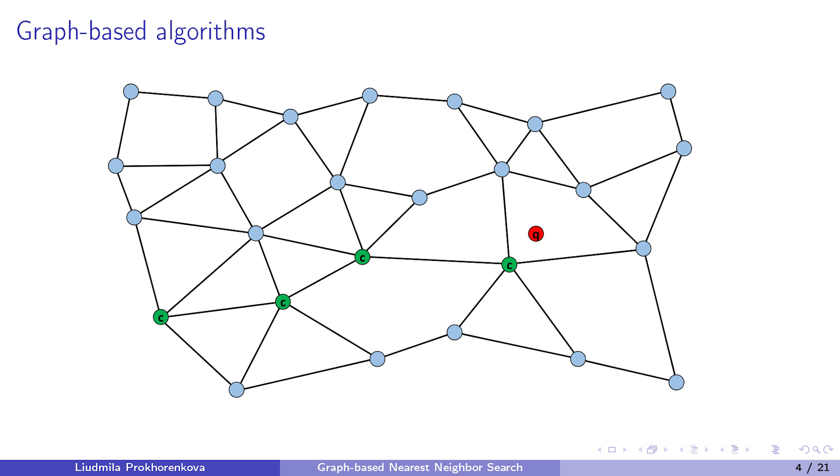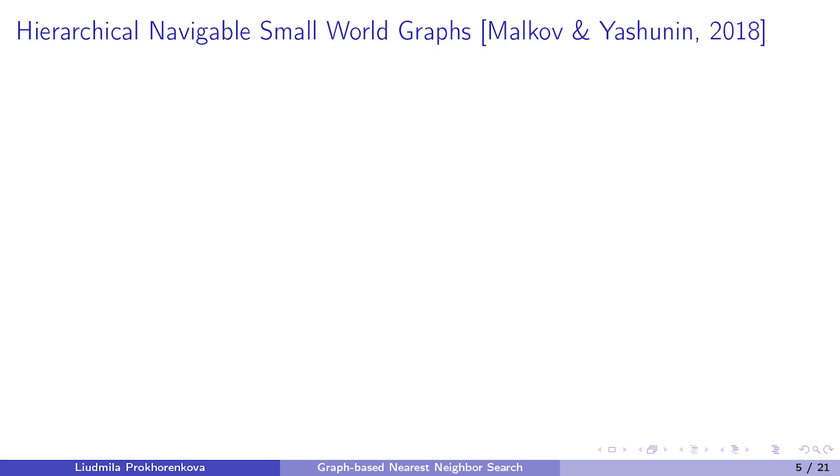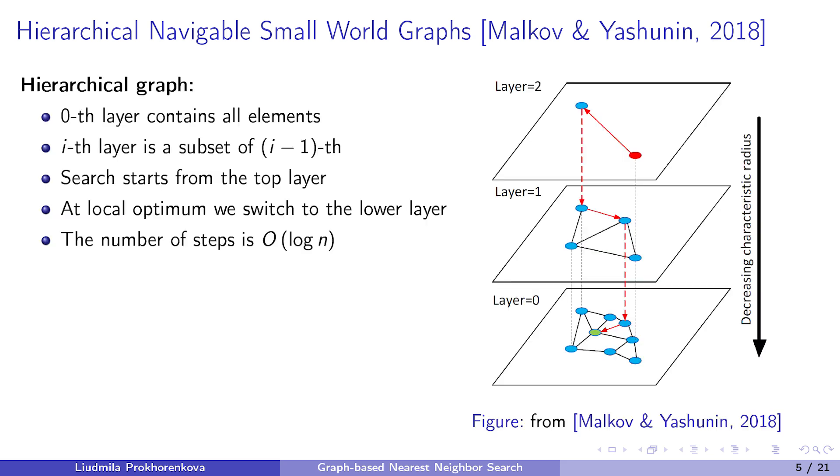There are many additional heuristics proposed for improving graph-based algorithms. I will cover some of them using a particular graph-based algorithm called HNSW as an example. I will not describe the full algorithm, but rather give intuition behind the key algorithmic details. One such detail is the multi-layer graph structure. The lowest layer contains all elements. In order to create each next layer, we subsample some fraction of elements from the previous layer.